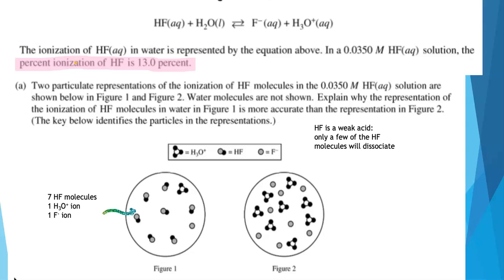I see 7 HF molecules. I see 1 hydronium ion. I see 1 fluoride ion. The vast majority of the molecules are still HF molecules. And I only have 1 out of the total of 8 that's dissociated. 1 out of a total of 8, that's about 13%. And that's what we said the solution had in terms of percent dissociation.